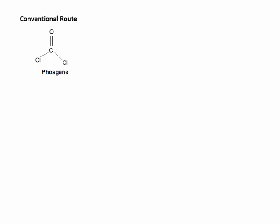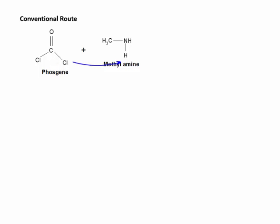In the conventional route, phosgene is used as a starting material and is treated with methyl amine. The lone pair on the nitrogen attacks the carbon of the carbonyl group. Chlorine, being a weak leaving group, is released. The negatively charged chlorine atom then abstracts the hydrogen, and the lone pair of electrons is retained on the nitrogen atom. This is how HCl is eliminated and we get MCC.